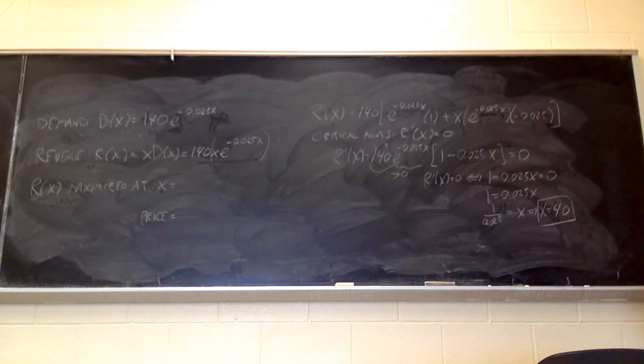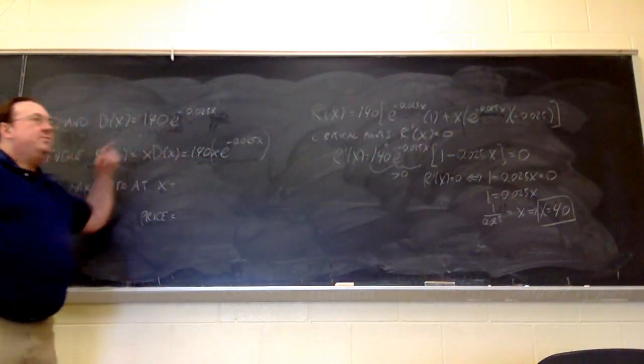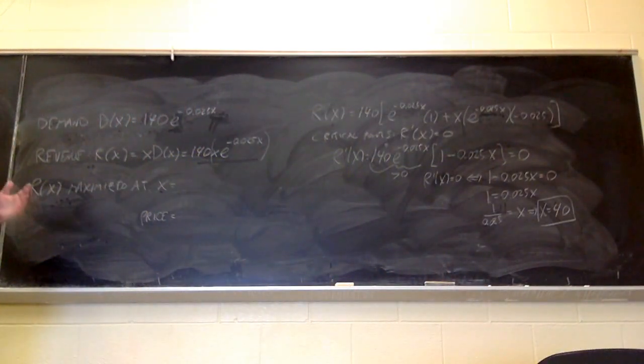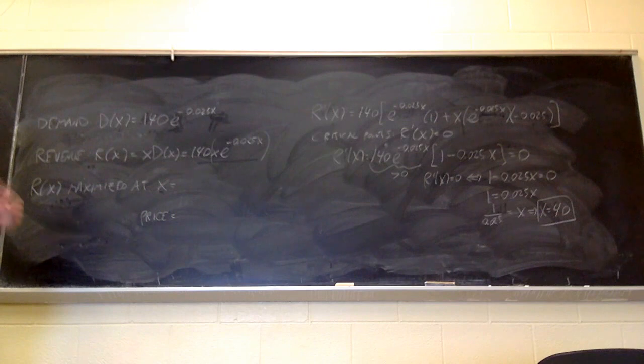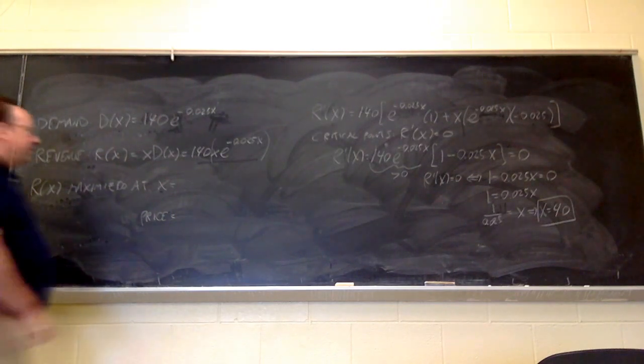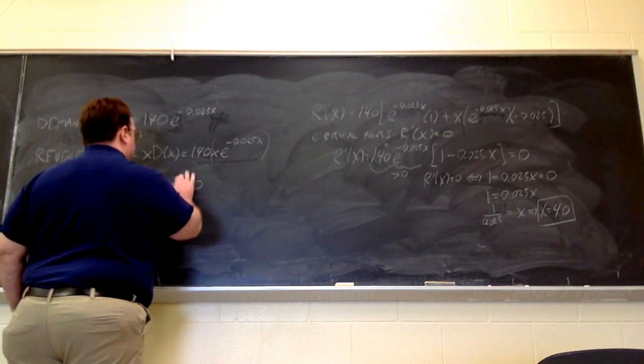Because you might think, oh, the more units you sell, the more revenue you'll make, except that the demand is a decreasing function of x. So, the more units you sell, the lower the price you can sell them at. So, we have these two forces competing against each other. So, we're finding the value of x that strikes the best balance. And that turns out to be x equals 40 units.